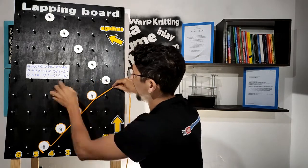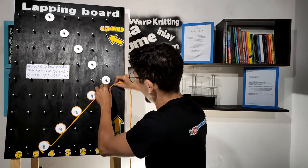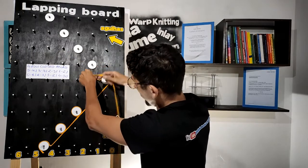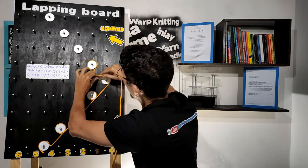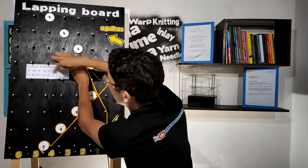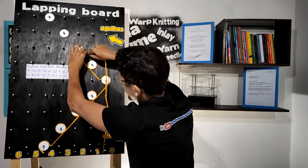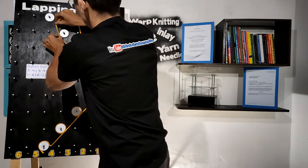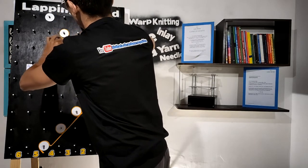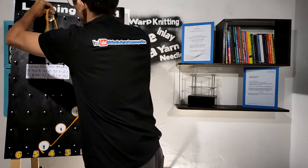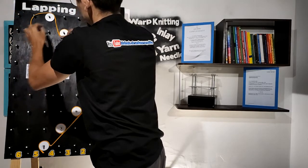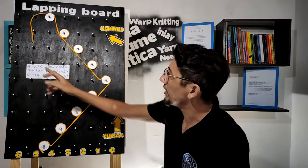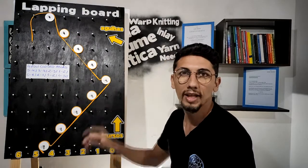And now zero-one; then two-one; three-two, four-three — to finish this entire repeat. Here we have the representation of the four-row closed atlas on the lapping board.